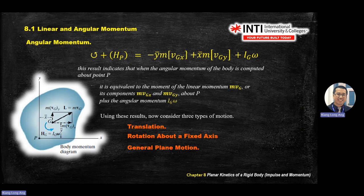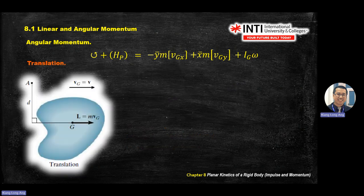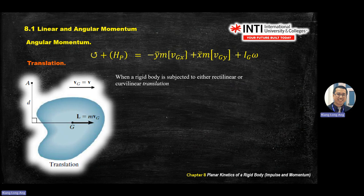x̄ and ȳ are the centroid coordinates — you already learned how to find these in statics, and they're also available in tables. For translation, you focus on the center of mass G. Momentum is m·v_G. Because you're looking at G, x̄ and ȳ are zero (you're already at the center of the body), so the inertia terms vanish.